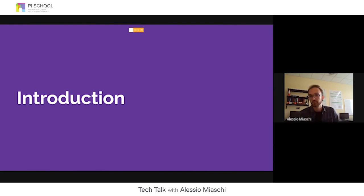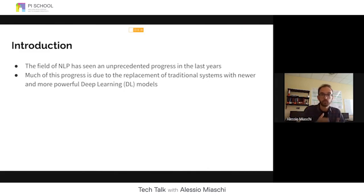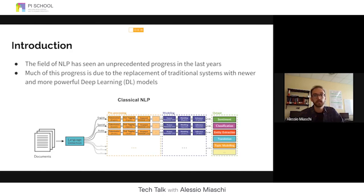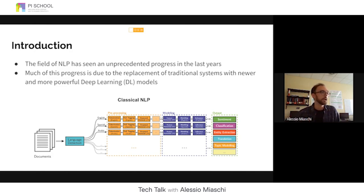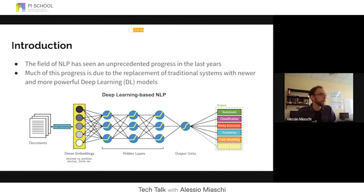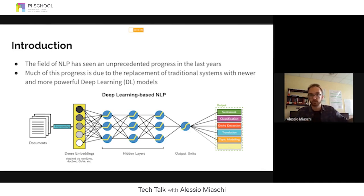Even if many of you already know about neural language models and deep neural networks, feel free to ask questions. We're in the context of NLP, which has seen unprecedented progress in the last few years, largely due to replacing traditional machine learning systems with more powerful deep learning models. We moved from a classical NLP pipeline — with long pre-processing, feature extraction, and classifiers like support vector machines — to a deep learning approach where we represent sentences using deep neural networks to perform tasks like sentiment analysis, named entity extraction, and so on.